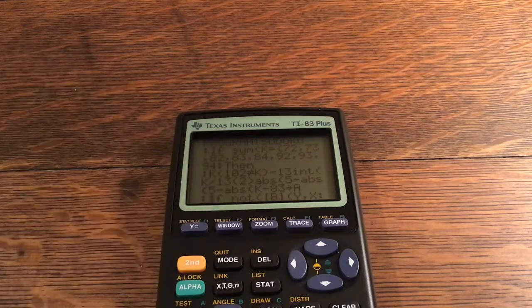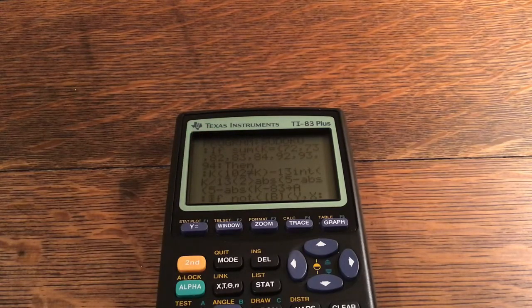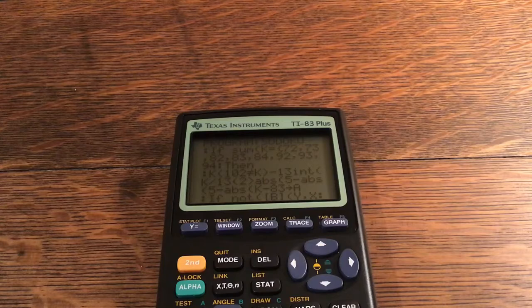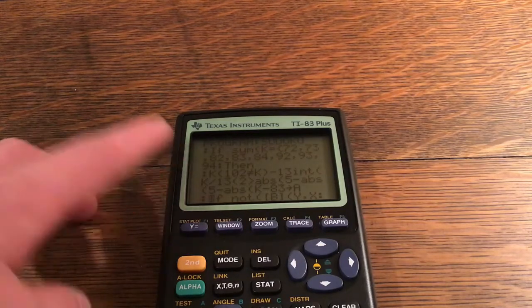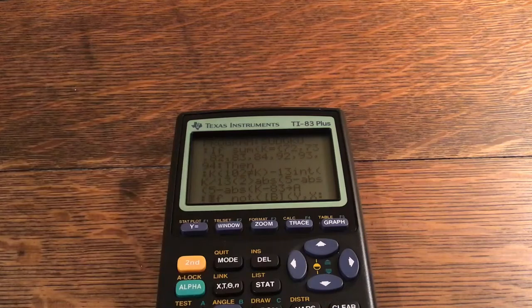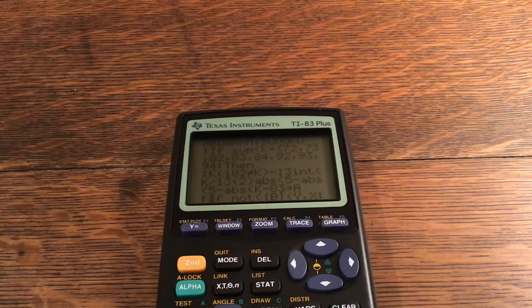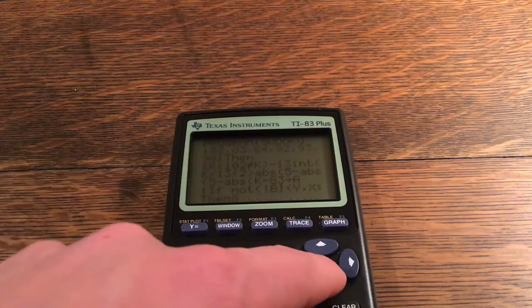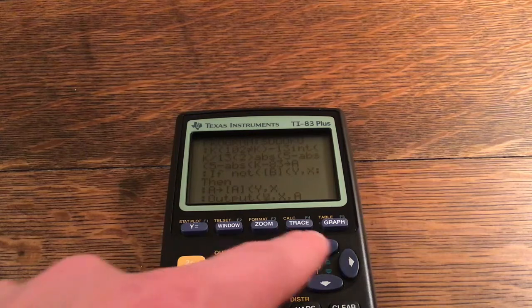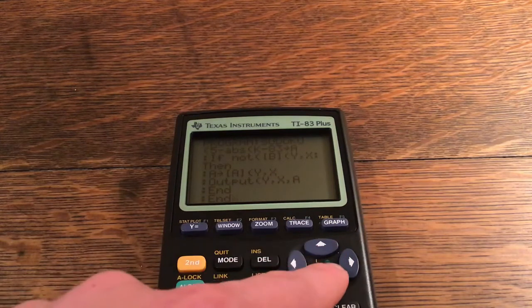So then we have K multiplied by 102 is not equal to K minus 13 multiplied by the integer of K divided by 13 multiplied by 2 is greater than absolute value of 5 minus absolute value of 5 minus absolute value of K minus 83 store into A. So that is a pretty complex line. And honestly, I understand it mostly, but I'm not going to attempt to explain it. It is a pretty valuable thing and it's extremely efficient. So just make sure that you type that in right because it will not return the correct number if you don't have it typed in correctly.